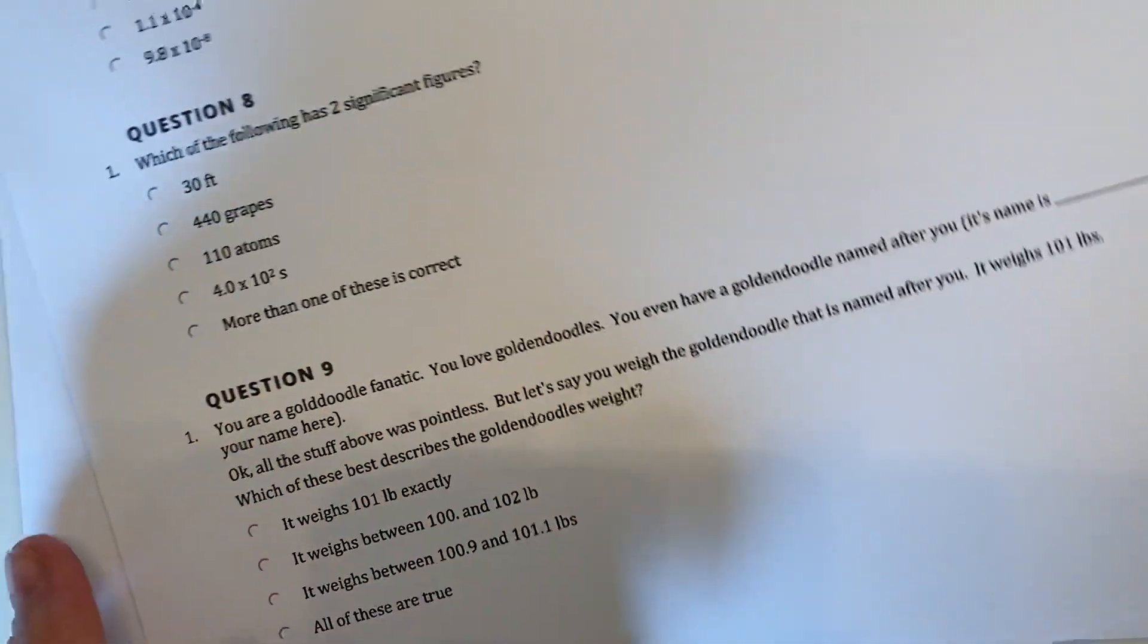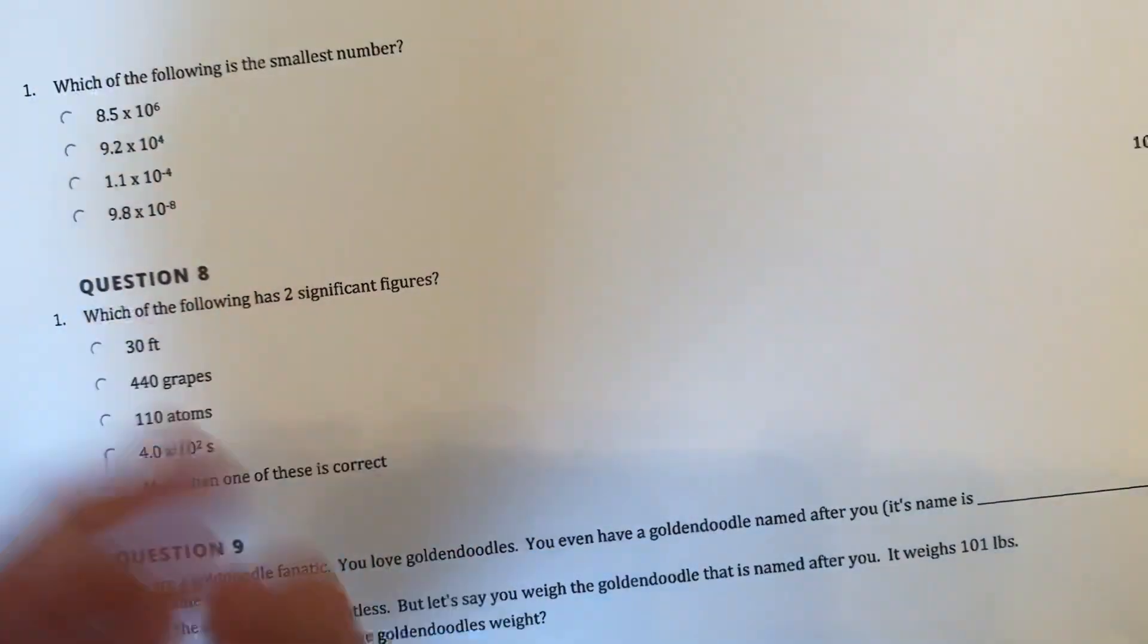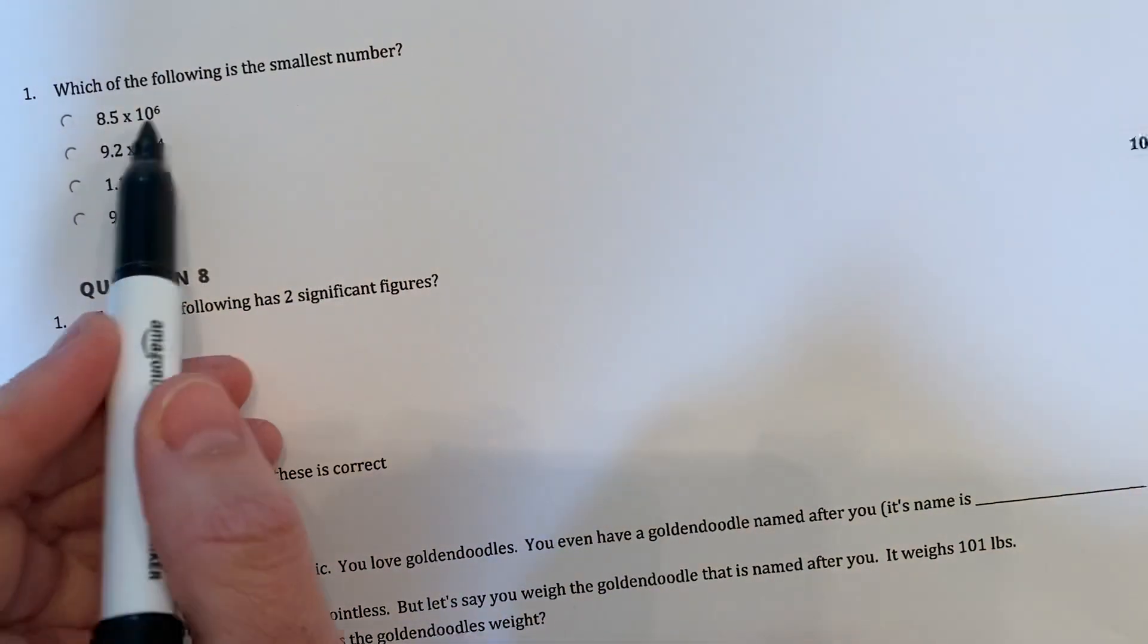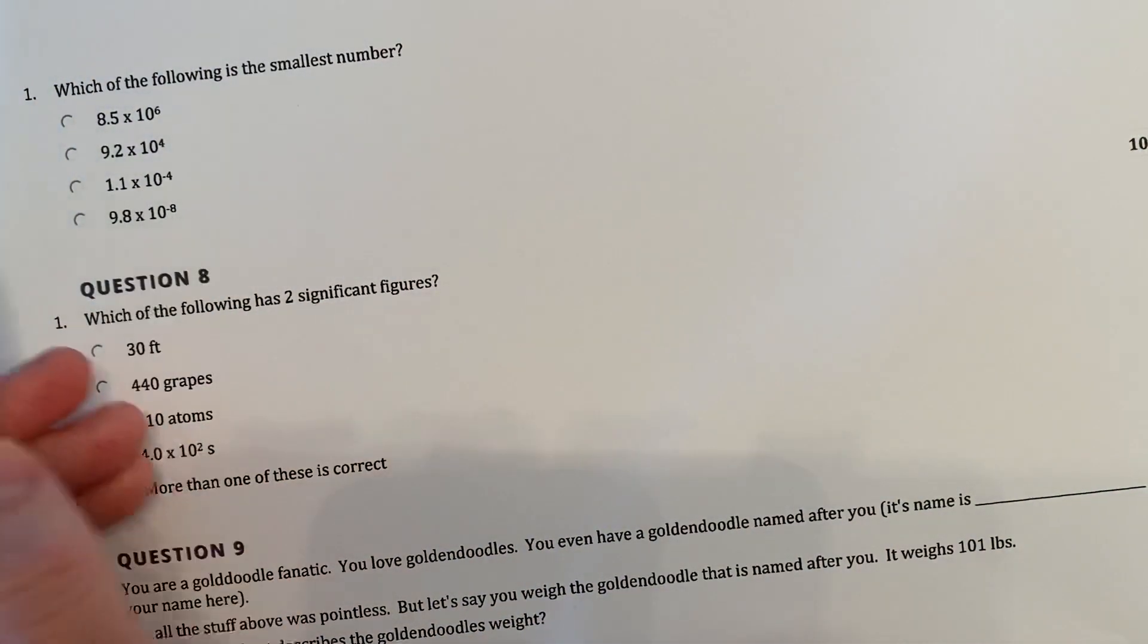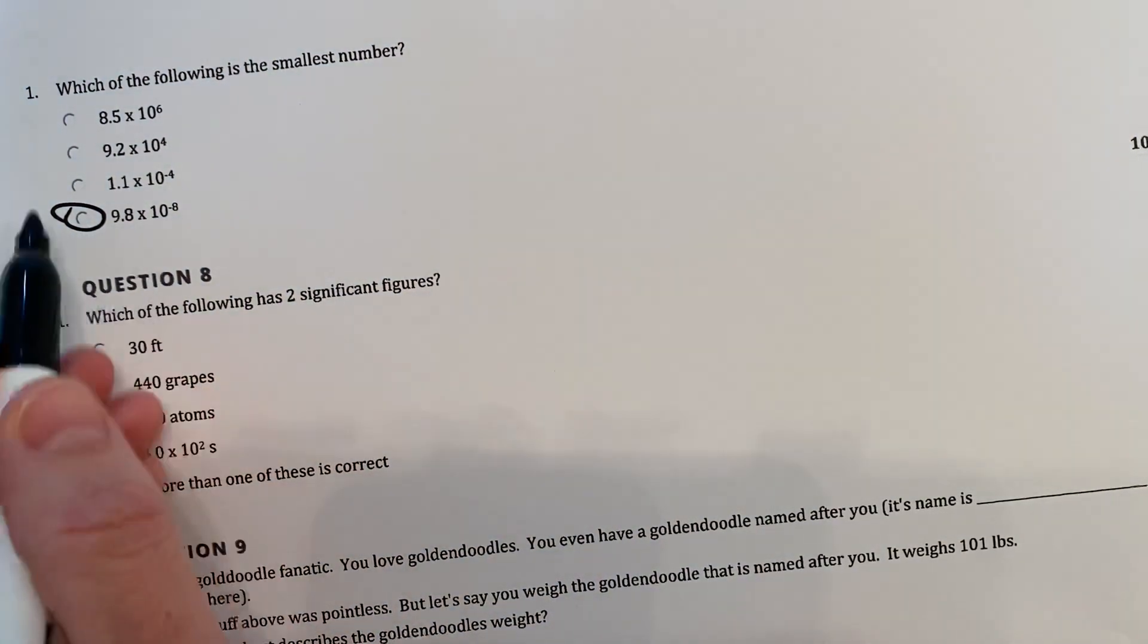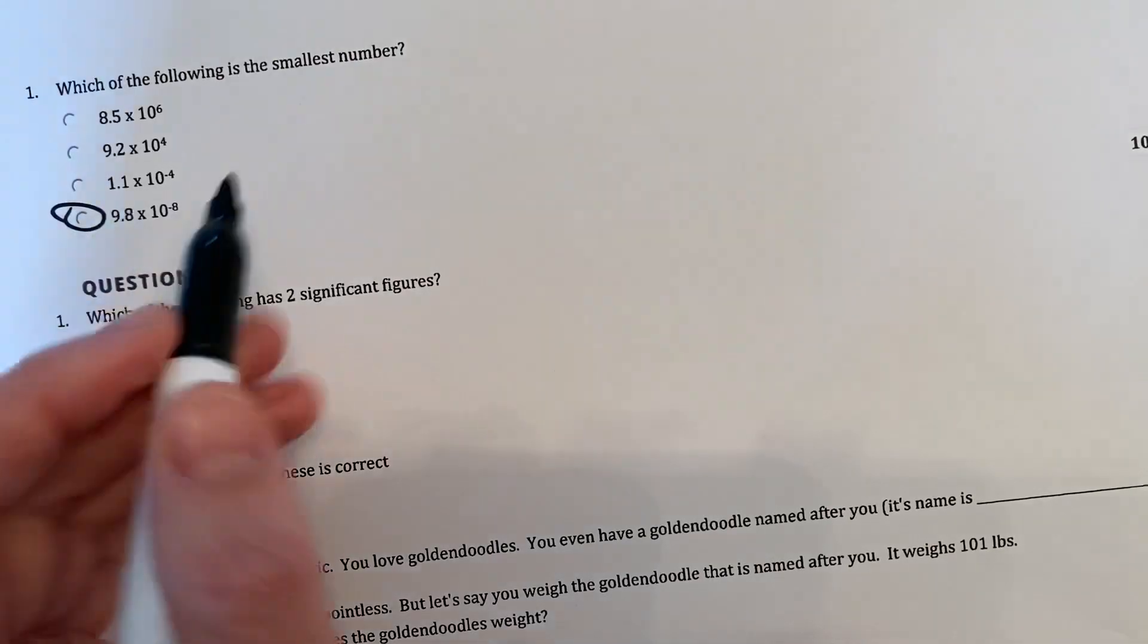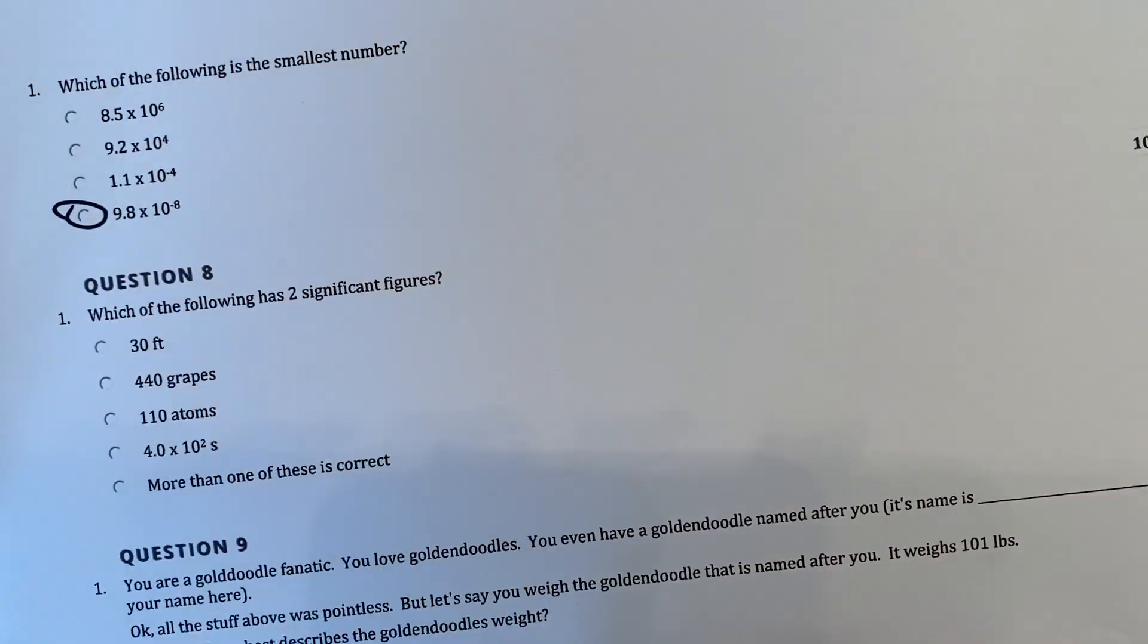Alright, question seven. Which of the following is the smallest number, so we're just looking at magnitude here. 10 to the 6, 10 to the 4, 10 to the negative 4, 10 to the negative 8, something to the negative 8, that's going to be, you're moving the decimal place to this direction, 8 times, it's going to be 0.00000098. There should be seven zeros before the 9 and the 8.